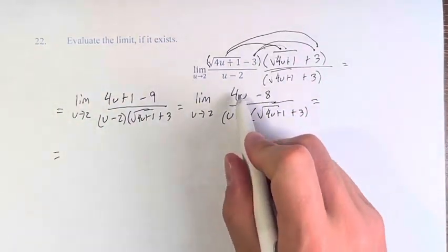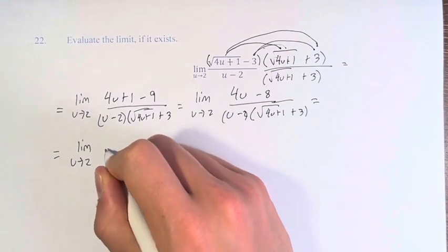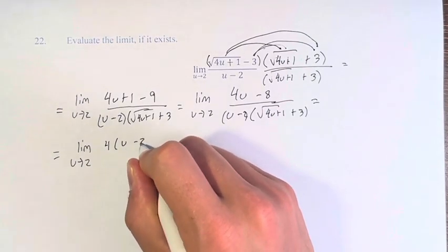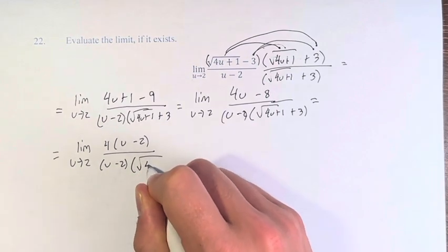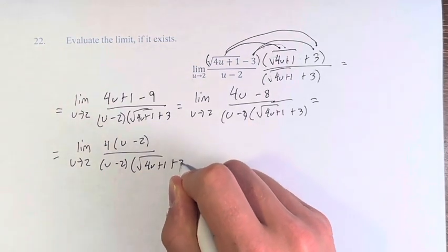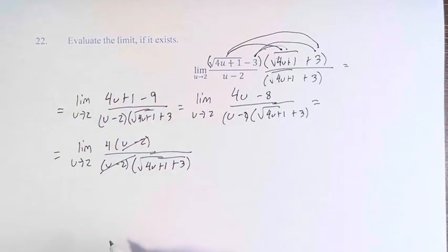And now we can see that if we take out a 4 from these terms, we get 4 times u minus 2 over u minus 2 times the square root of 4u plus 1 plus 3. So we can see the reason for doing this. The u minus 2s cancel.